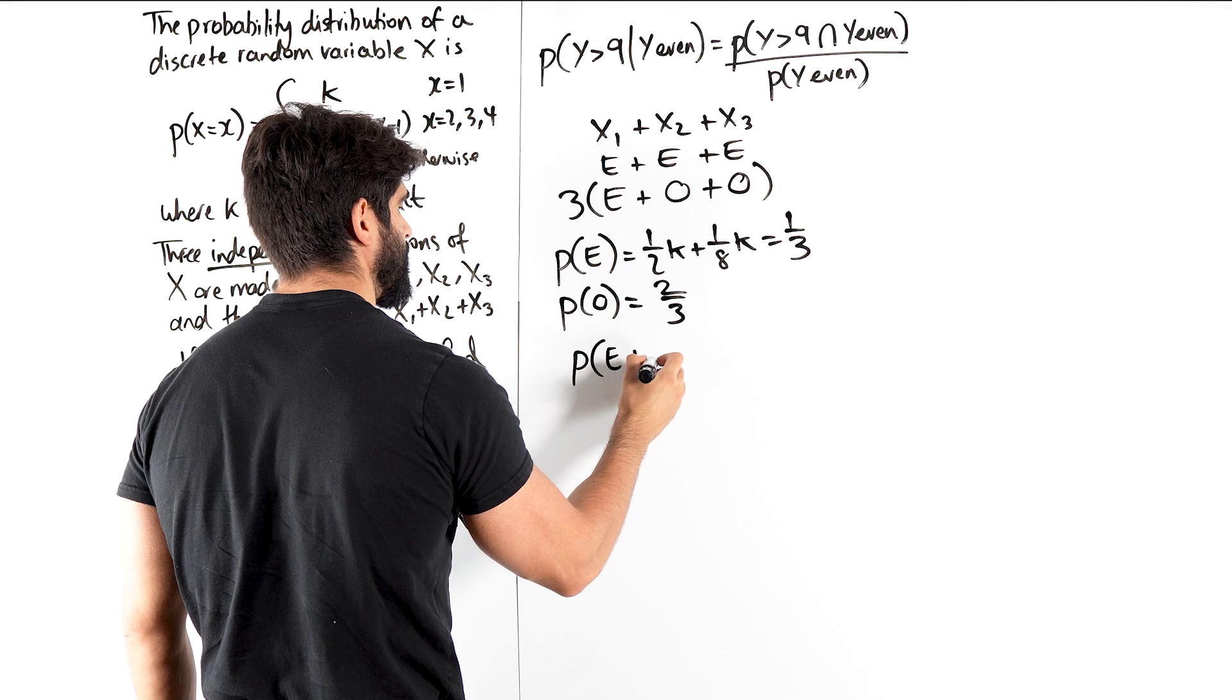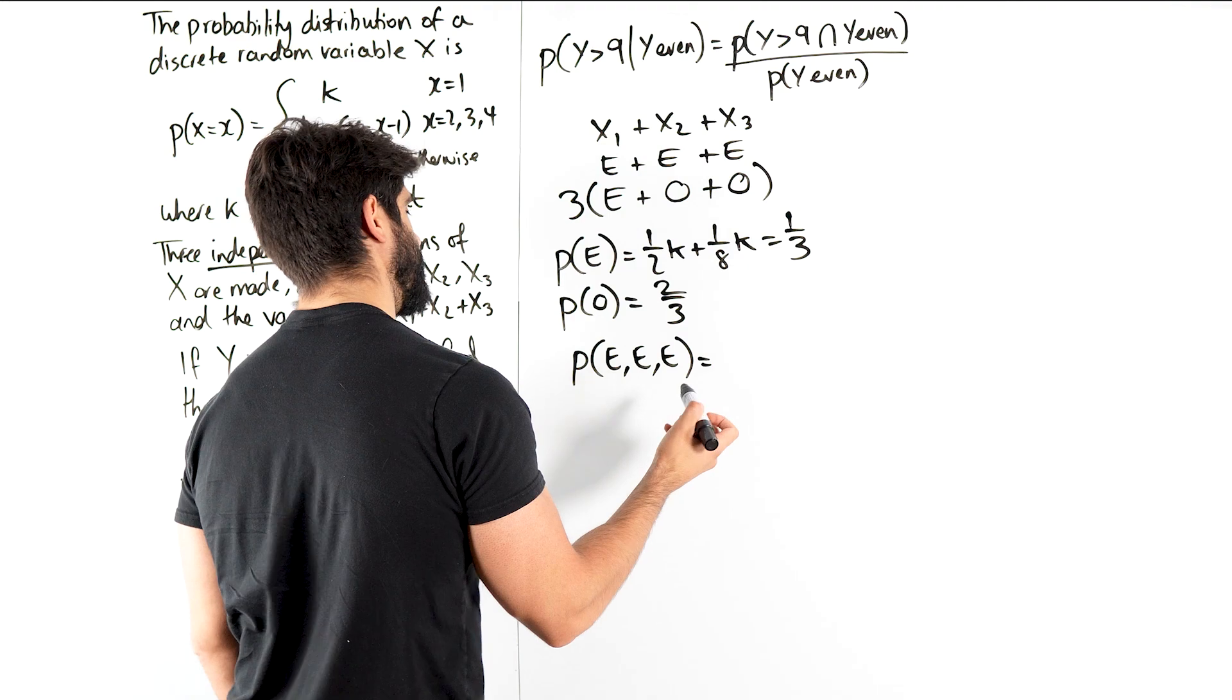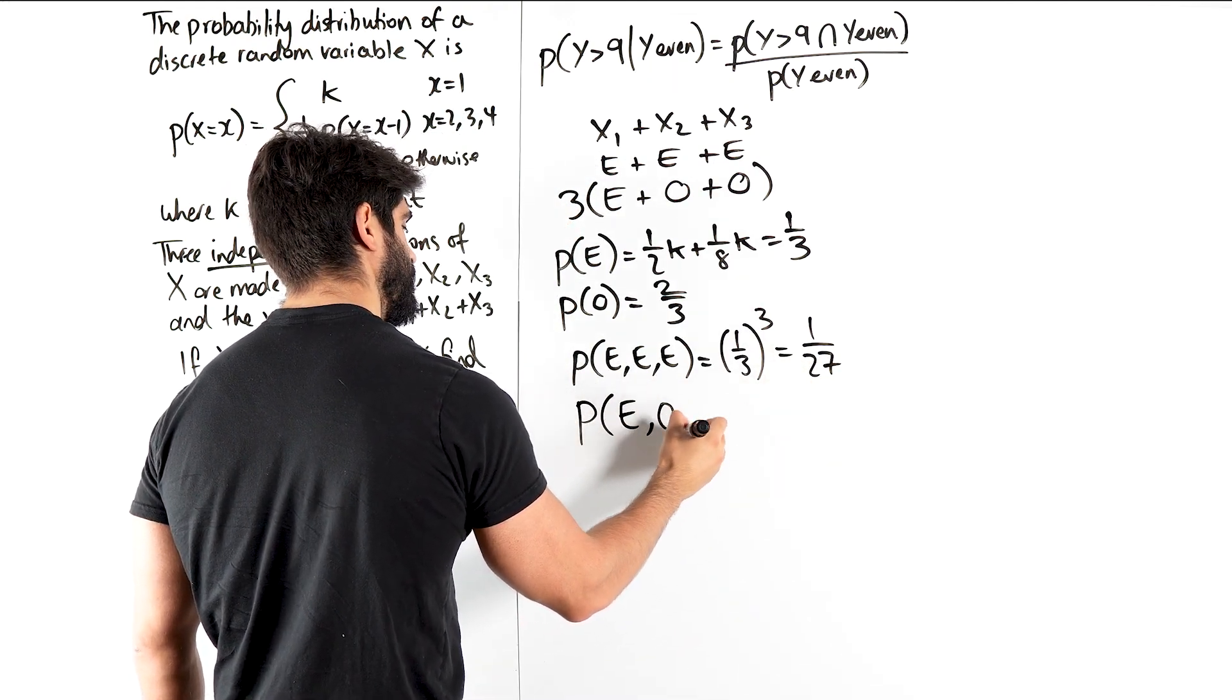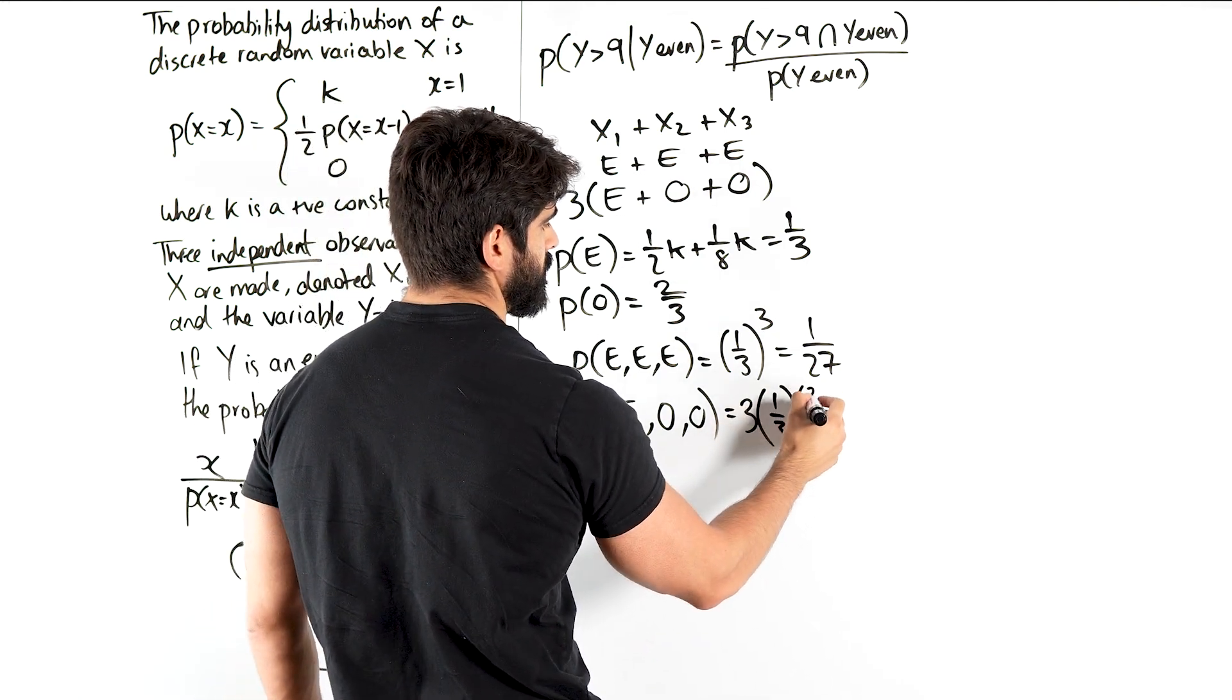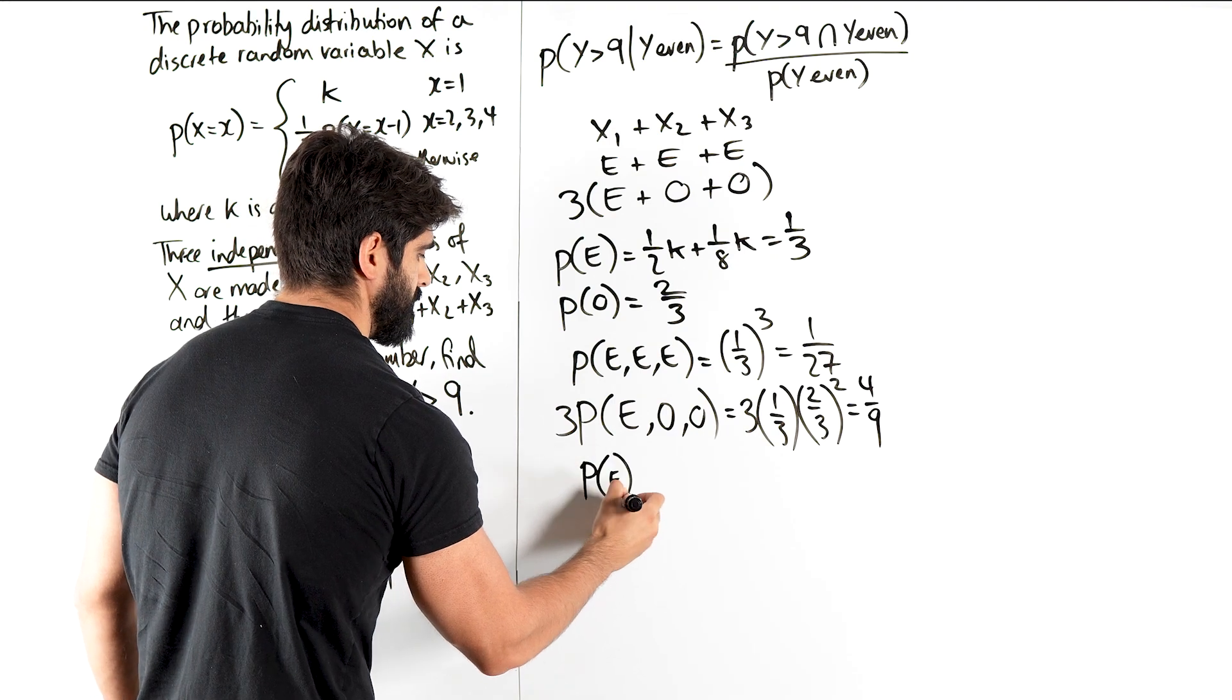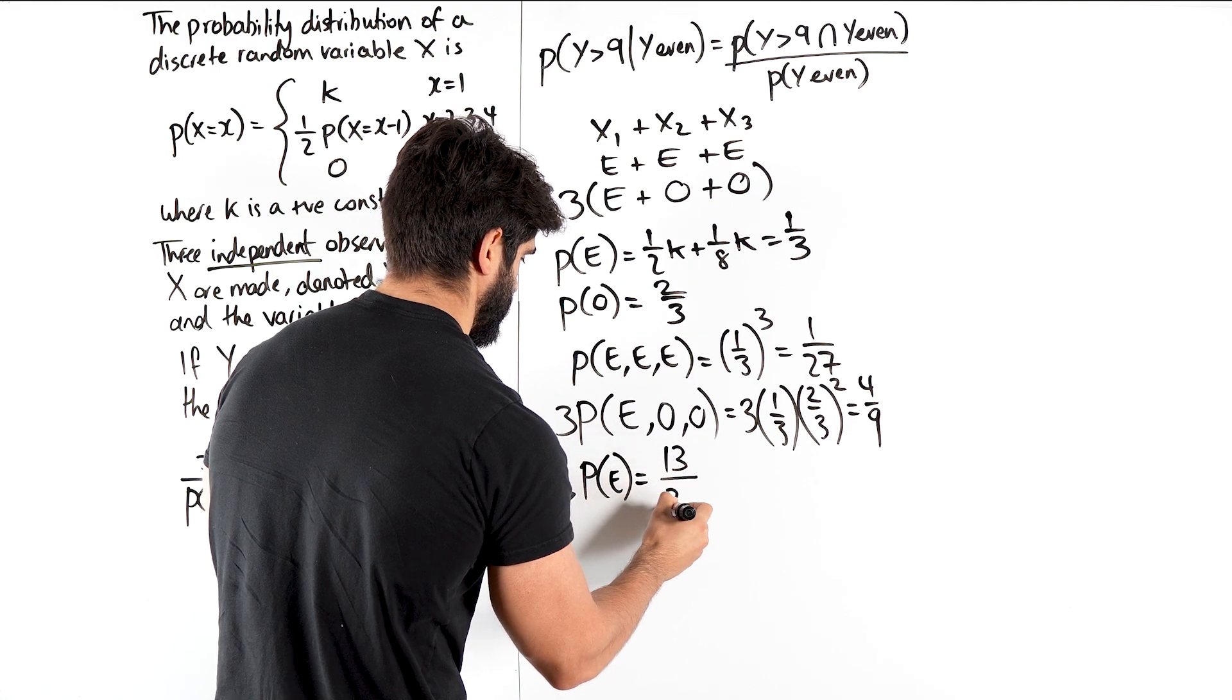So the probability of getting 3 evens, the probability of E then E then E is, yeah, I guess the only negative of doing it this way then is you can't see then explicitly why it's bigger than 9. We're still going to have to consider which combinations are bigger than 9. So E, E, E is 1 third cubed. Third times a third times a third is 1 over 27. And the probability of even, odd, odd is 3 lots of the probability of even times odd squared. 3 lots of a third. So that's 4 ninths. So the probability of an even number here is 1 over 27 plus 4 ninths. 13 over 27.